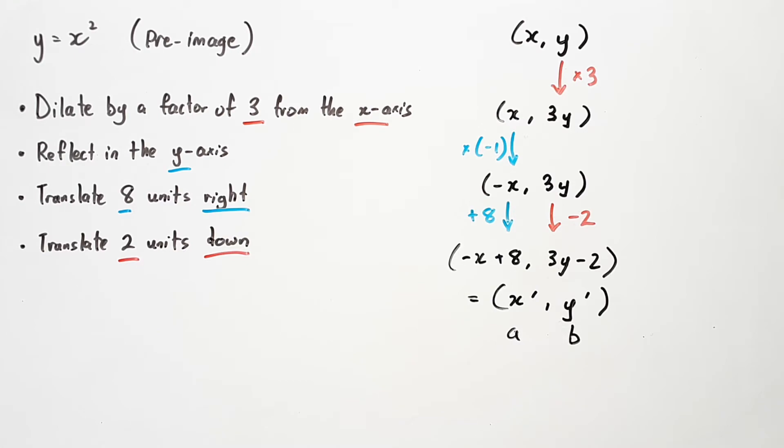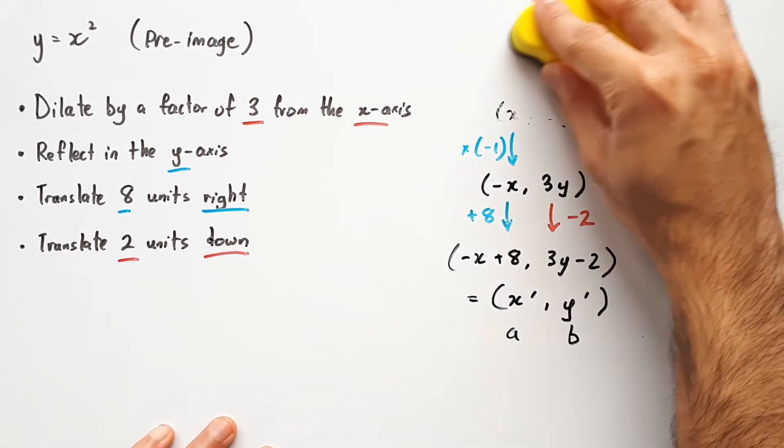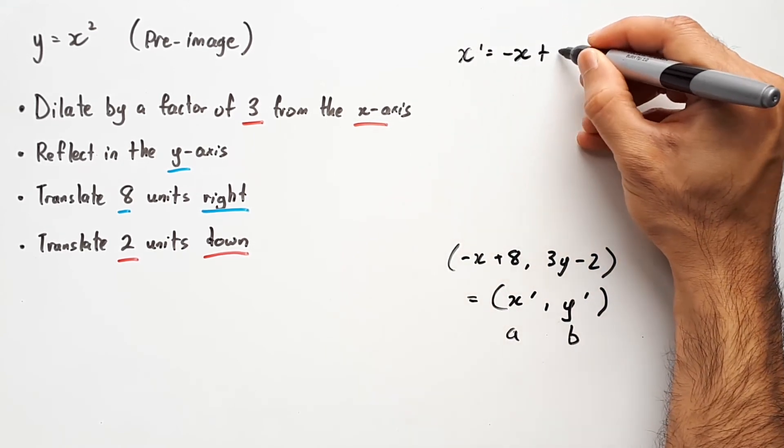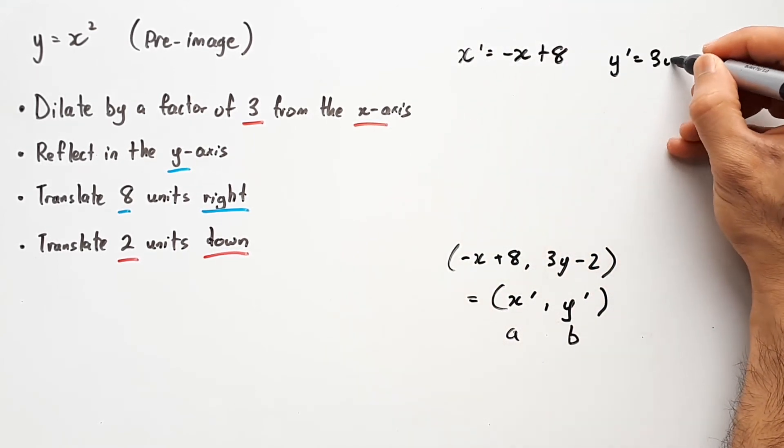Now since these two coordinate formats are comparable to each other, we can set up two equations for comparing each part of the coordinate. So x' equals -x + 8, and y' equals 3y - 2.